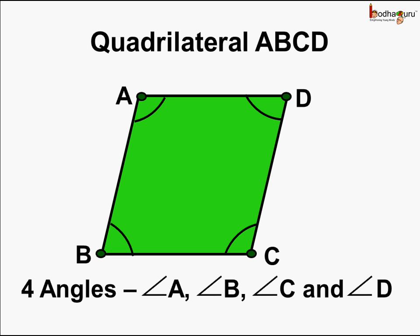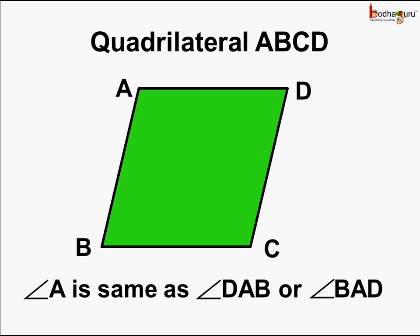Can we call these angles by other names? Yes, we can. Let us see. Angle A is same as angle DAB or also we can say angle BAD. So this is angle A or angle DAB or angle BAD.